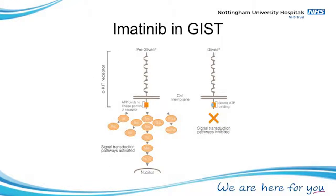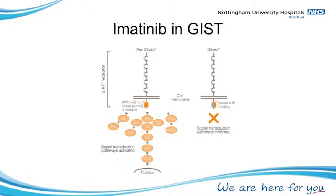What does imatinib actually do? In a normal receptor there is an activity centre, and if activated it sends downstream messengers that tell cells to grow. In many GISTs this is mutated and therefore constantly switched on — like if you constantly eat you will get bigger — and that's what the GIST does, until you block it and suddenly all the downstream activity is switched off and the cells stop growing.